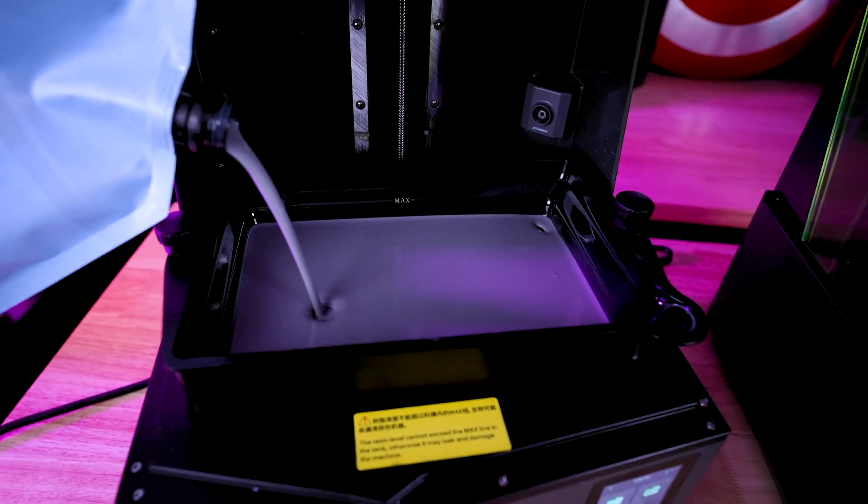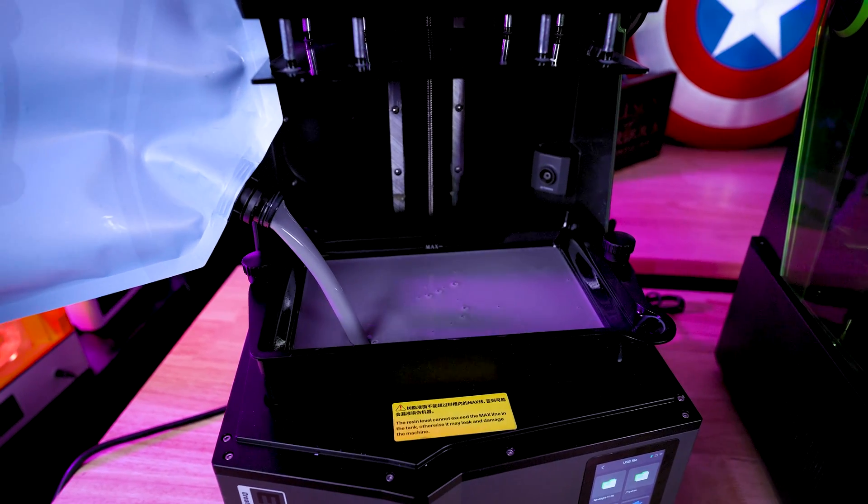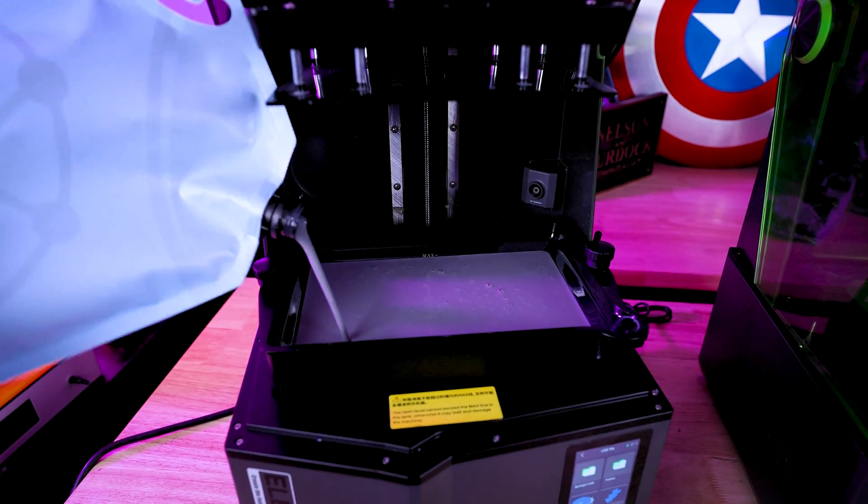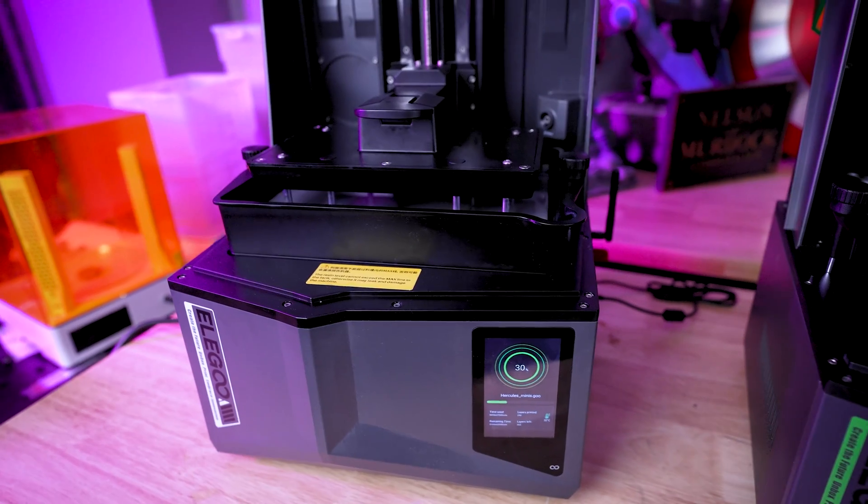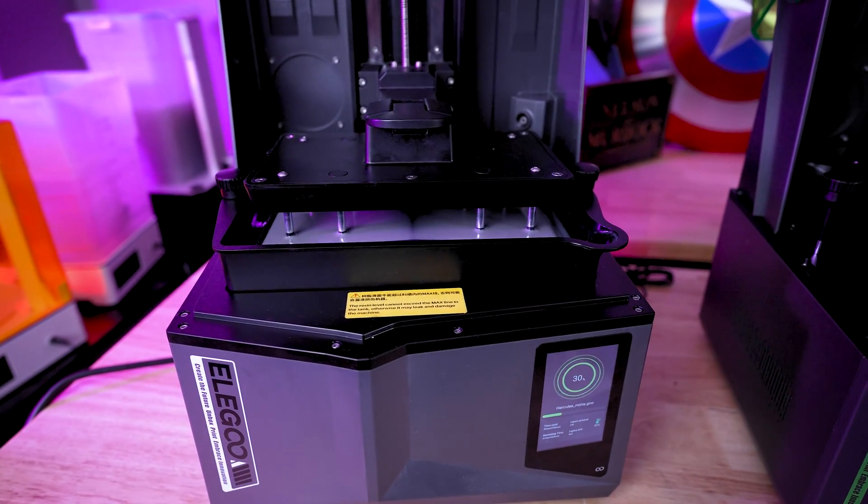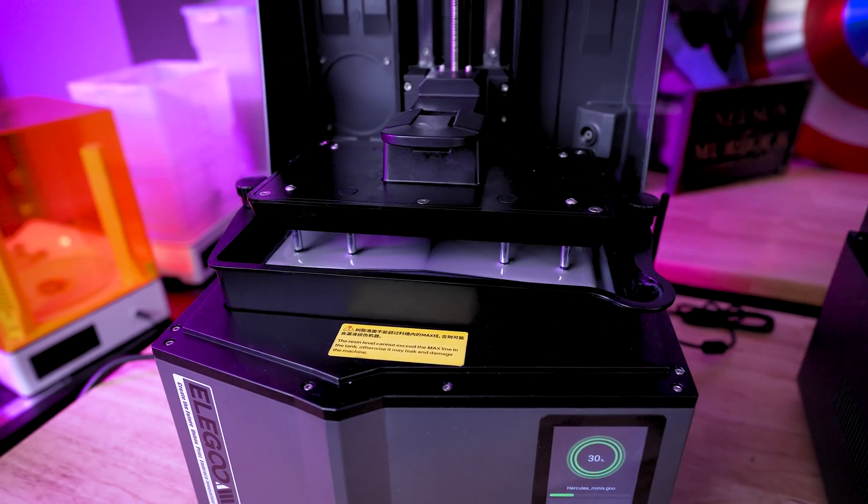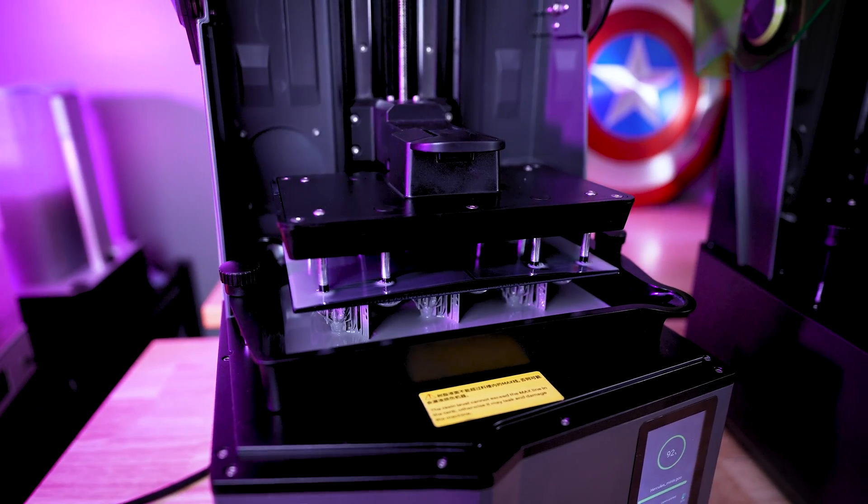So you resin 3D print it, you're gonna cure it, and then you're gonna bake it for about one hour. Now let's get some prints up and running on the Elegoo Saturn 4 Ultra and the Saturn 4. I'm gonna be using the Saturn 4 Ultra with this new Hercules resin and I have to say it has a really nice smell to this resin. It has like an oaky, smoky smell to it. It's really nice.